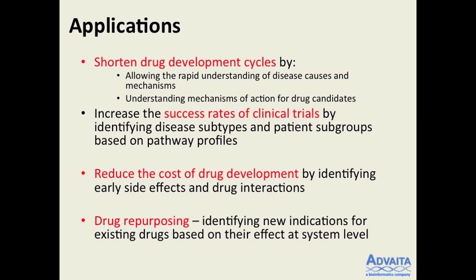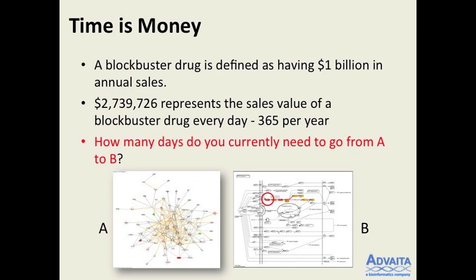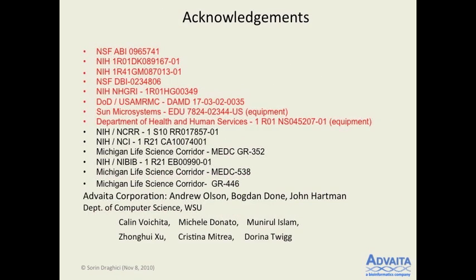Finally, this can be used in drug repurposing — you profile a drug and a disease at the pathway level and match drugs that have an antagonistic effect with the effect of a disease on a given pathway, shortcutting drug development by finding new indications for existing drugs. A blockbuster drug is by definition a billion or more in annual sales — about 2.7 million per day. This systems biology approach looks at the magnitude, type, and position of every gene and all its interactions. We have a number of grants and papers, and I'll stop here and be happy to answer questions.